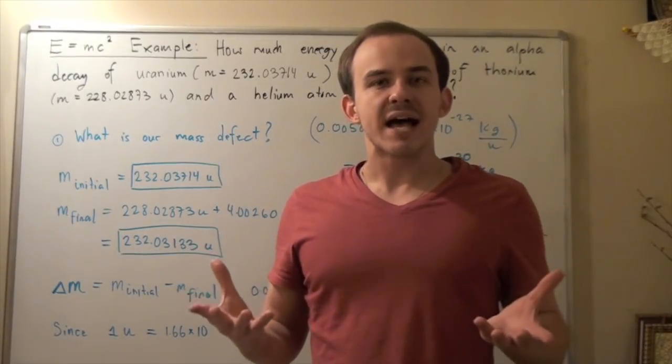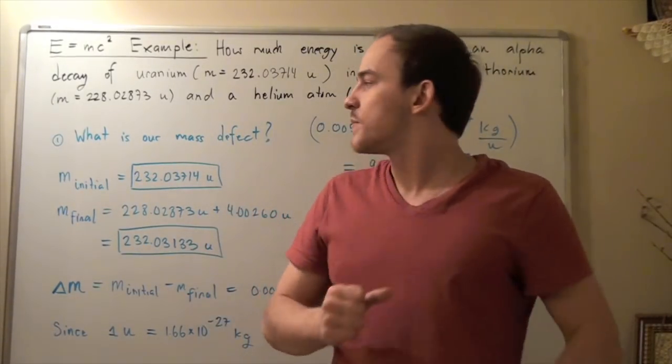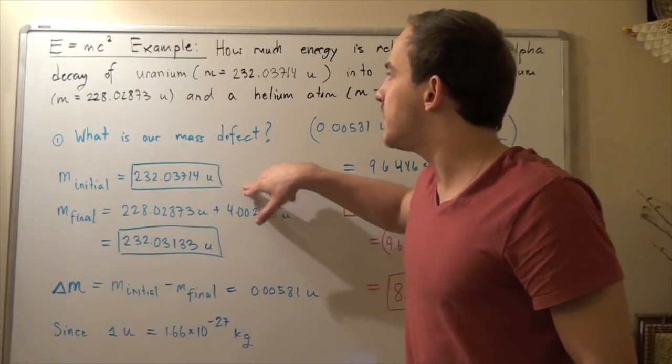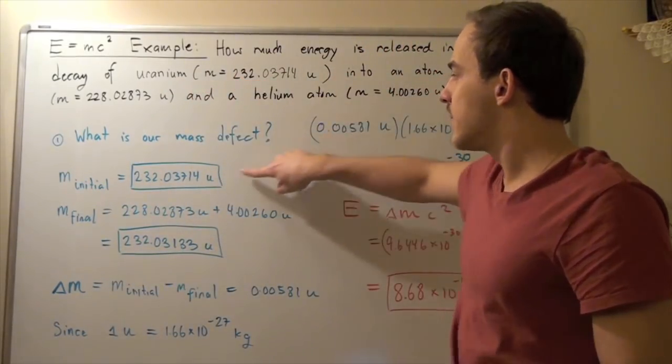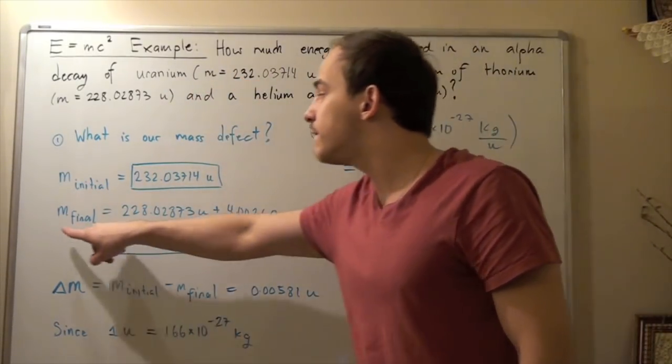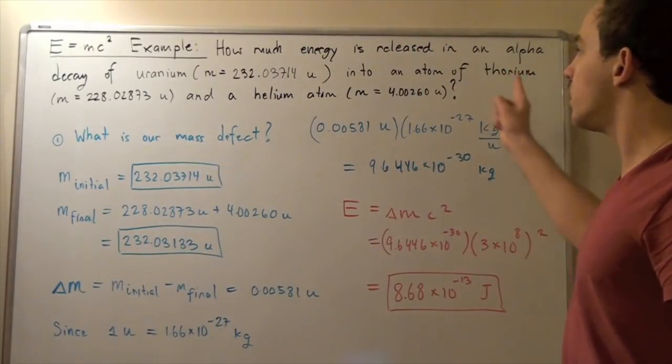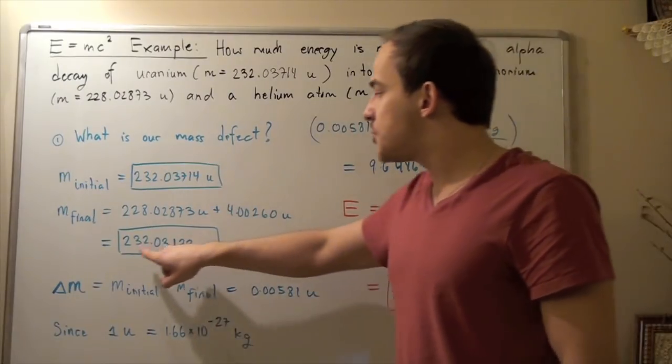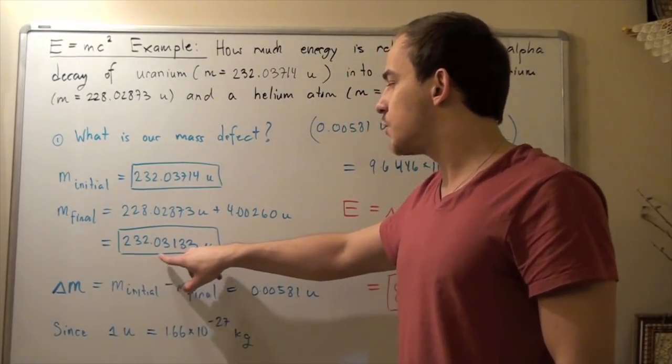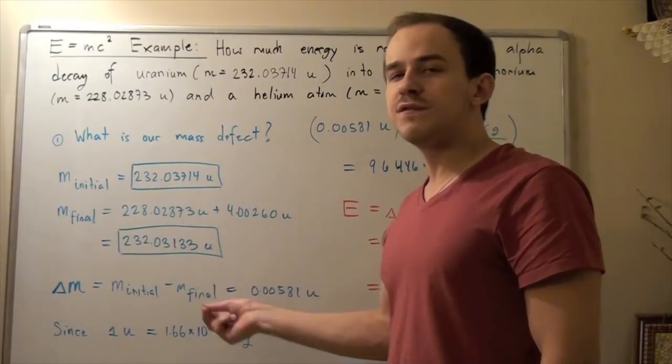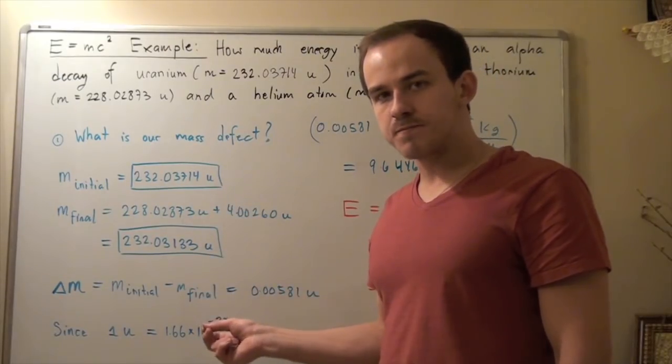Our initial mass is simply the mass of the uranium atom. Our final mass is the mass of the two atoms produced. Initial mass is the uranium mass given here. Final mass is simply the sum of the two masses of thorium and helium, which is 232.03133 unified atomic mass units.